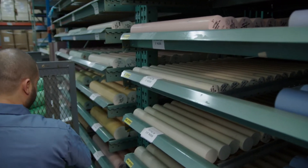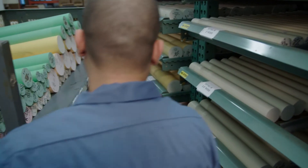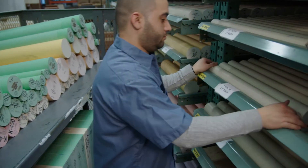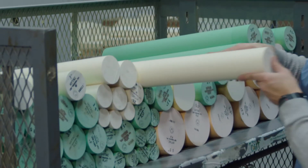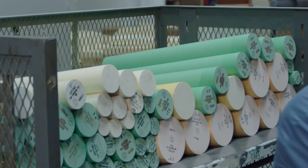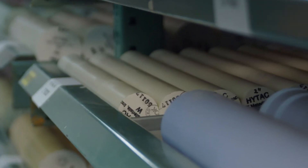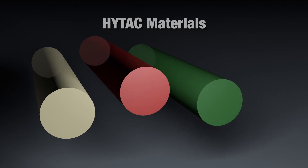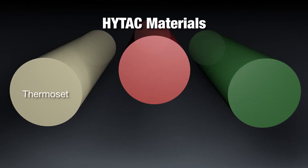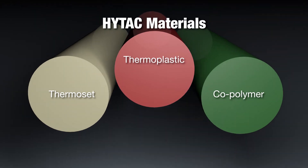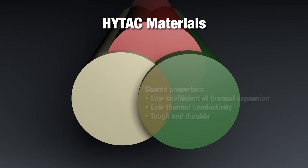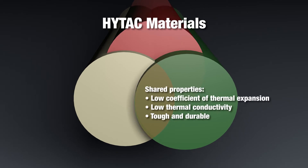CMT Materials offers eight grades of high-tech syntactic foam plug assist materials that are optimized for superior performance when thermoforming a wide variety of plastics. There are three categories of high-tech materials: thermoset, copolymer, and thermoplastic. They all share properties essential for thermoforming plastic — a low coefficient of thermal expansion and low thermal conductivity.